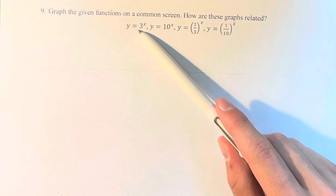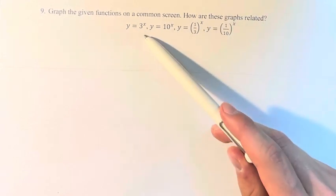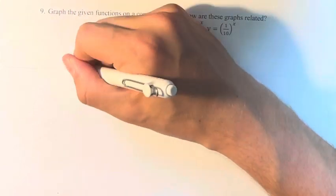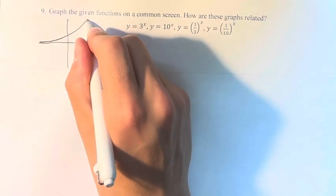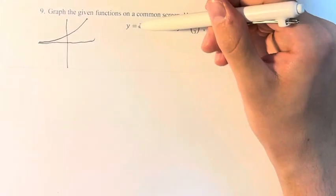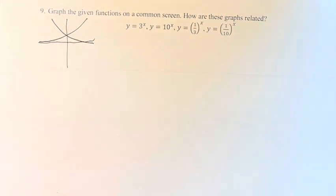So we have y equals 3 to the x, 10 to the x, 1 third to the x, and 1 tenth to the x. So we have all these exponential functions, so we know that they are going to have the rough shape like this for these bases that are greater than 1, and like this for these bases that are less than 1.